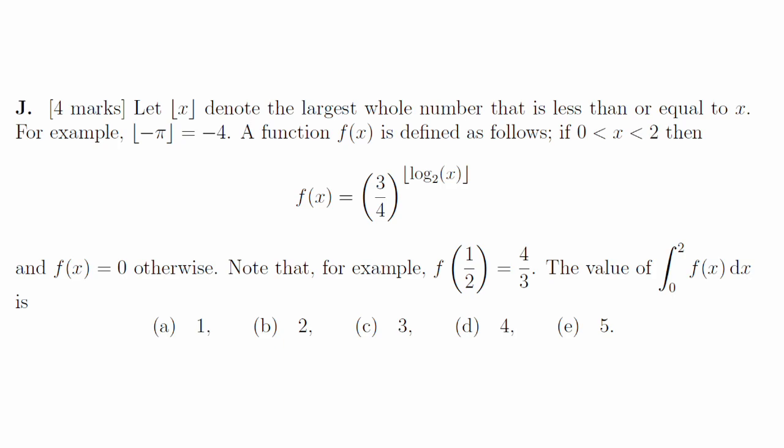1j. This function looks like a sequence of rectangles next to each other, each one half as wide and 4 thirds as tall as the previous. Their areas form a geometric sequence, and the sum of that sequence is 3.